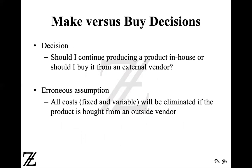The erroneous assumption we make is that if we discontinue producing in-house, all costs — variable and fixed — are going to be eliminated, and the only cost we incur is what the external vendor charges per unit. This is an erroneous assumption. Not necessarily all fixed and variable costs can be eliminated. Only variable costs tied to the product and allocated fixed costs may be eliminated — not the common fixed costs.